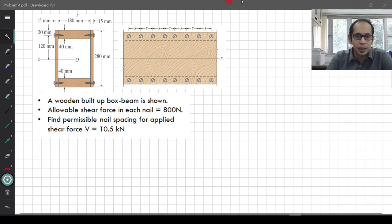These are the different nails that you are looking at when you are looking from the side view. And it says that the applied shear force, this entire cross section is subjected to a shear force of 10.5 kilonewton. How do we do this problem?